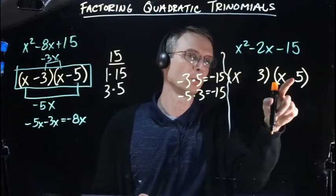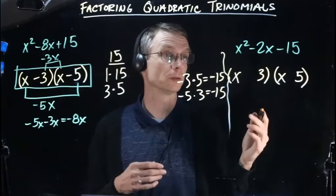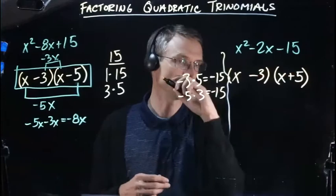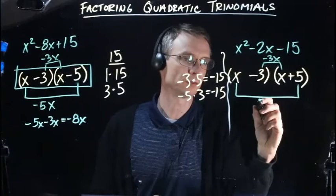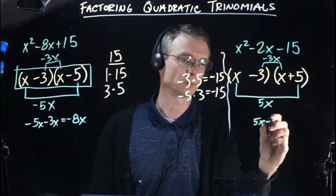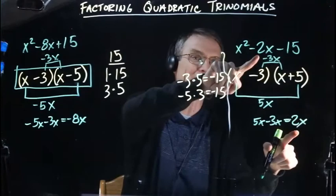I'll make this positive 5 and that negative 3. Multiplying: negative 3 times x gives negative 3x, and x times positive 5 gives positive 5x. Adding those: 5x minus 3x equals 2x. But I need negative 2x, so that didn't work.